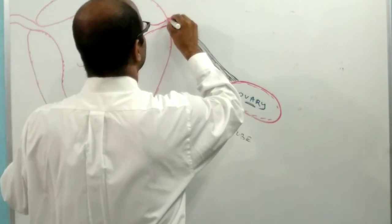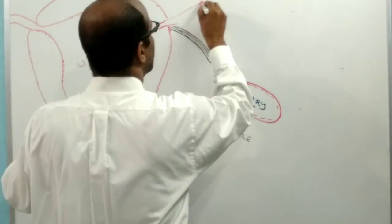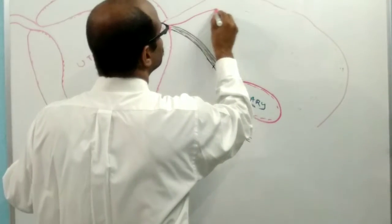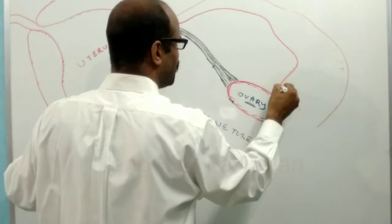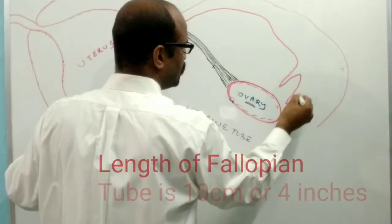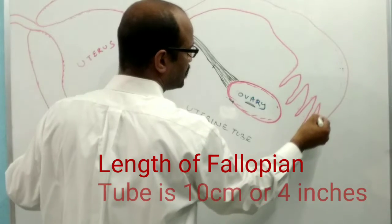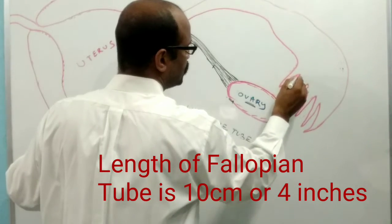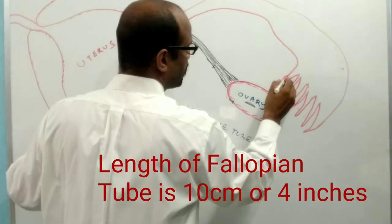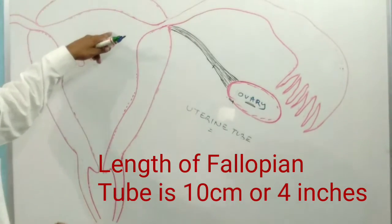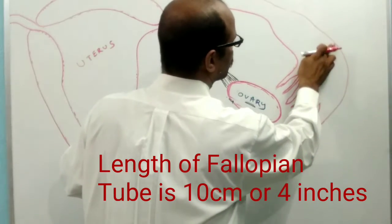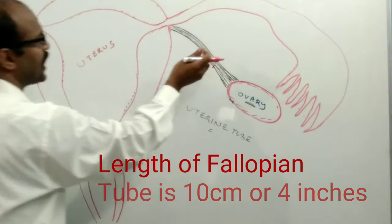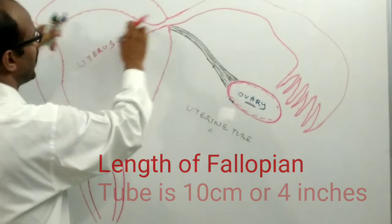This is the start region of the fallopian tube. The fallopian tube extends from the ovary to the uterus. The uterus receives the opening of the fallopian tube at the suprolateral region.